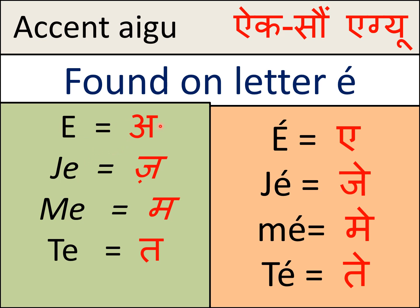The letter 'e' without any accent is pronounced 'a.' So for example: j + e = ja; m + e = ma; t + e = ta. Now when I put an aigu on top of e, the sound changes from 'a' to 'e.' So: j + é = je; m + é = me; t + é = te.